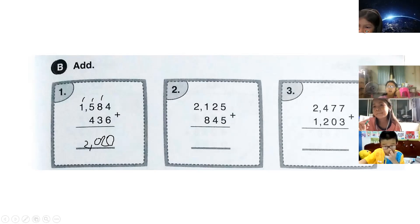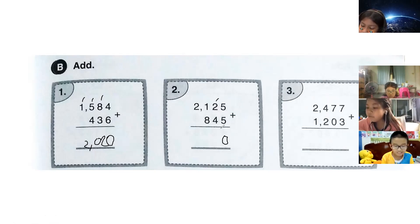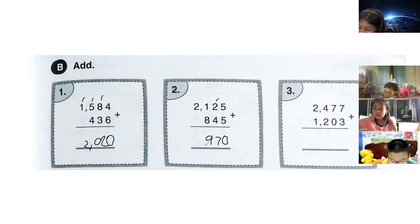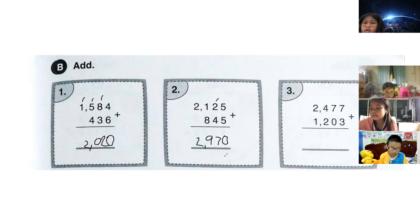Number two — I want to try Jun. Five plus five equals ten, carry one. Four plus two equals six, plus one equals seven. Eight plus one equals nine. And two. The sum is two thousand, nine hundred and seventy — 2,970. Very good!